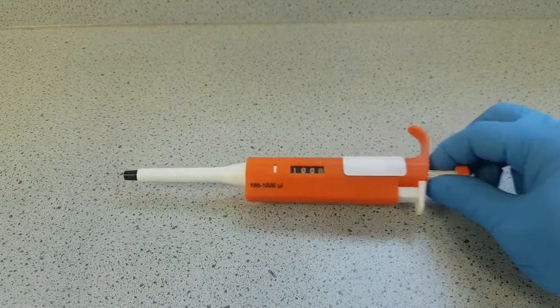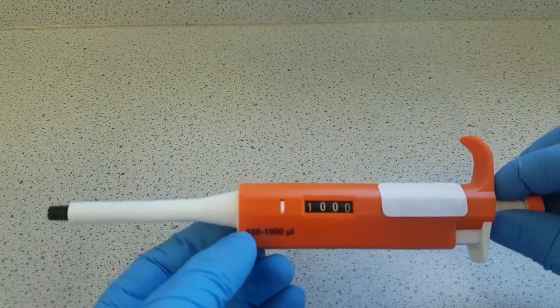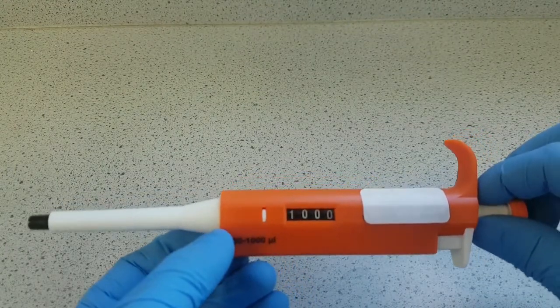In this video I'm going to be showing you this particular auto pipette, which has a volume of 100 to 1000 microlitres. There are 1000 microlitres in a millilitre, so this has a maximum capacity of 1 millilitre.